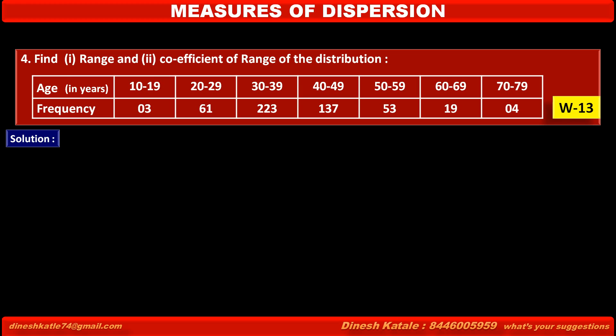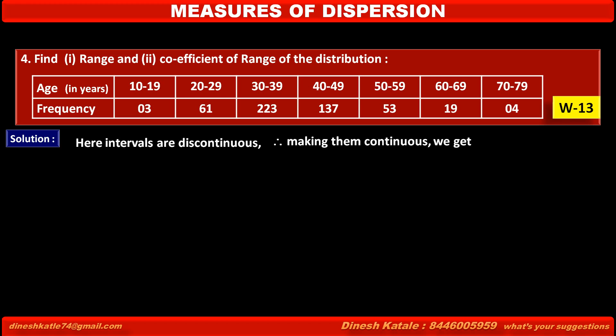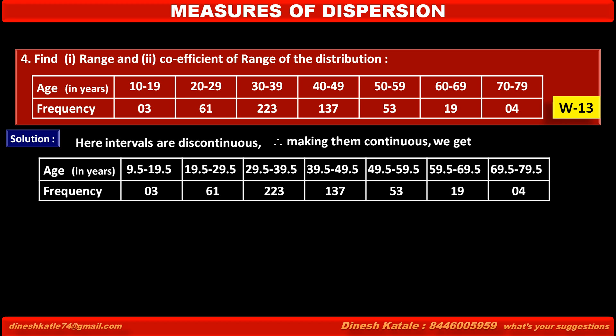Solution: Here, the intervals are discontinuous. Therefore, making them continuous, we get the following table. We can write ages in years with continuous class intervals as: 9.5 to 19.5, 19.5 to 29.5, 29.5 to 39.5.